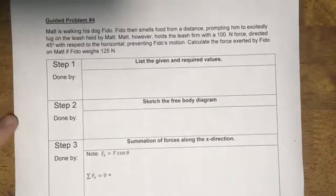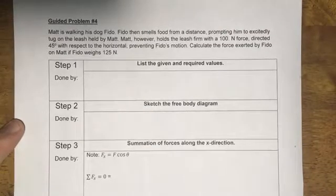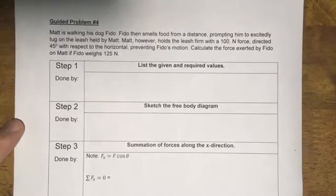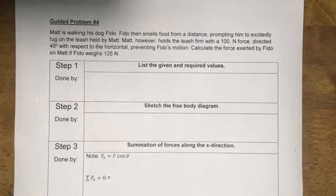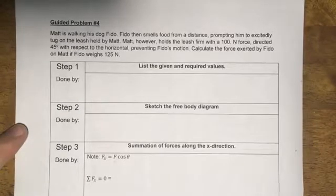Matt is walking his dog Fido, and Fido smells food from a distance, prompting him to excitedly tug on the leash held by Matt. However, Matt holds the leash firm with a 100 newton force directed 45 degrees with respect to the horizontal, preventing Fido's motion. Calculate the force exerted by Fido on Matt if Fido weighs 125 newtons.